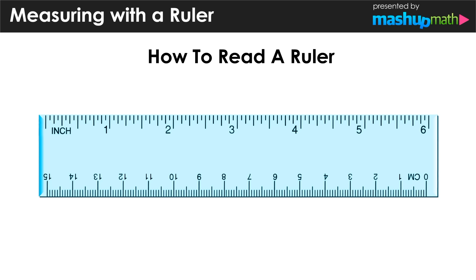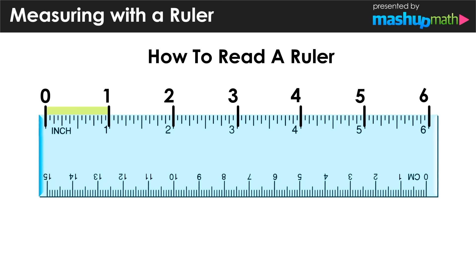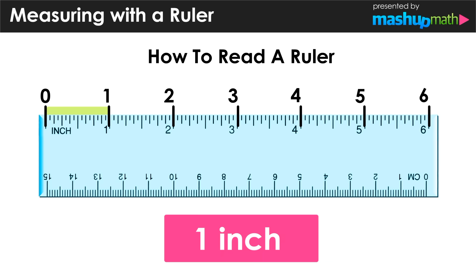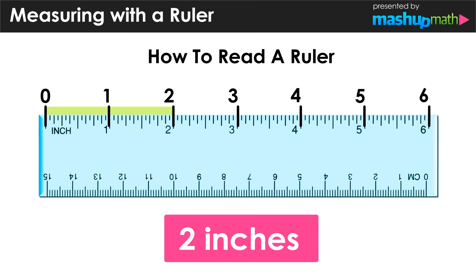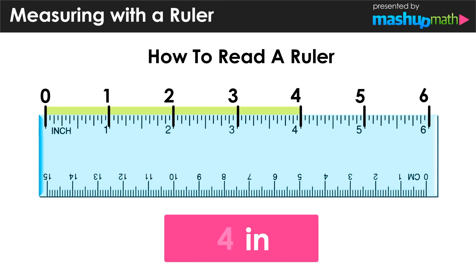Let's take a look at the side of the ruler labeled in inches — you can determine that by looking for the word 'inch' or 'in' as an abbreviation. The large numbers one through six are labeled on the ruler, and each of these spots is a value of one inch in length. So the distance between zero and one is one inch, between zero and two is two inches, and between zero and four is four inches.